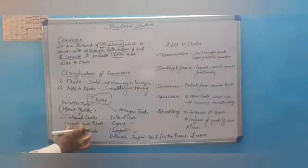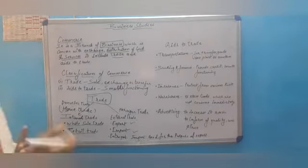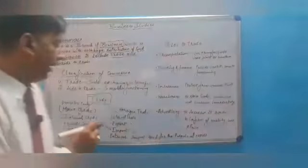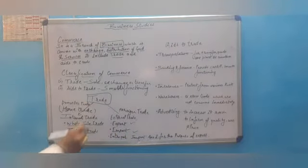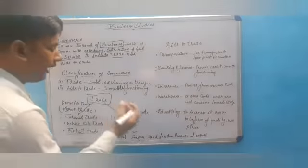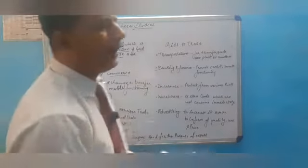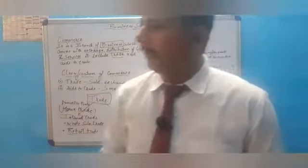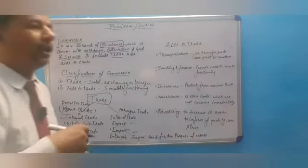Internal trade is divided into wholesale trade and retail trade. In wholesale trade, we buy goods in bulk and sell to retailers. In retail trade, we directly contact the customer. External trade is divided into three parts: export (sale of goods to foreign countries), import (buying goods from foreign countries), and entrepot (importing goods for the purpose of export).